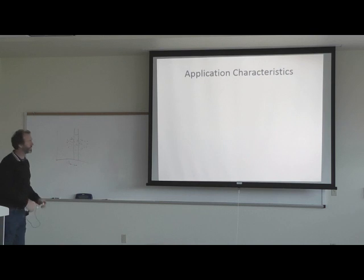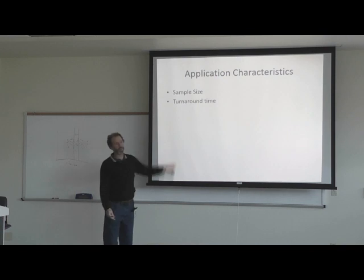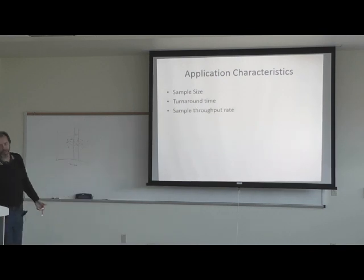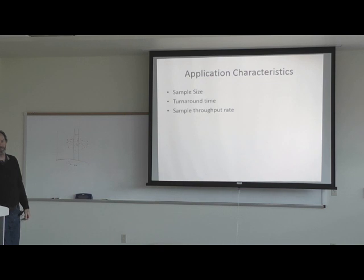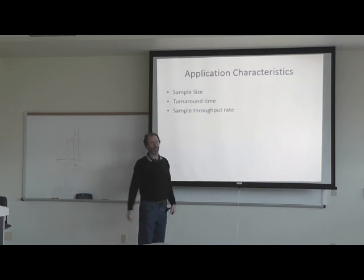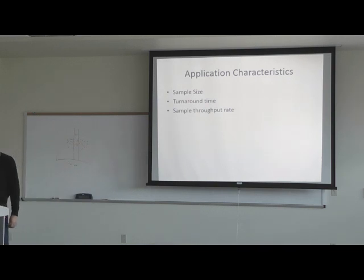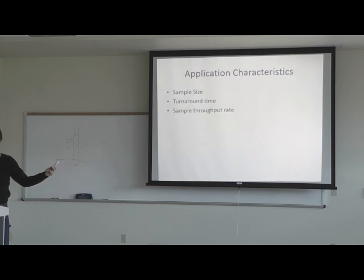Application characteristics to look at: what kind of sample size, how many tests you're going to run, and how fast those tests need to be turned around — the turnaround time and sample throughput rate. Throughput is basically the number of samples that can go through the machine at one time. Our 96-well plate reader reads 96 wells with one run — it measures all 96 wells every time you put it in, and only reports the ones you highlighted.